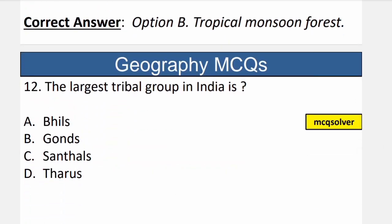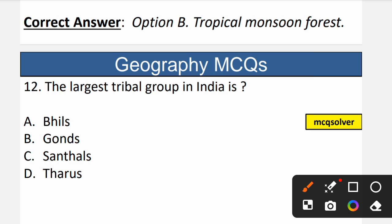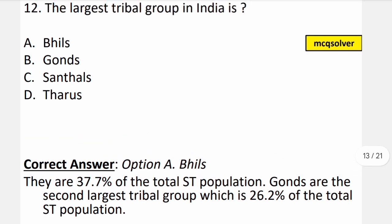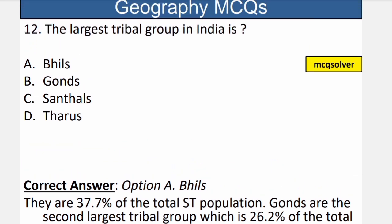Question number 12: The largest tribal group in India is which? The correct option is A — Bheels. Bheels are the largest tribal group in India, comprising around 37% of the total scheduled tribe population. Gonds are the second largest, comprising 26.2%. So Bheels are the largest tribal group in India.